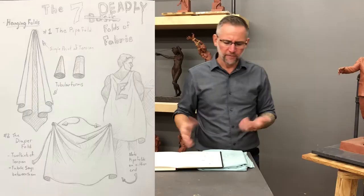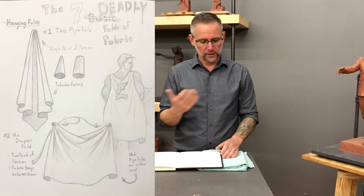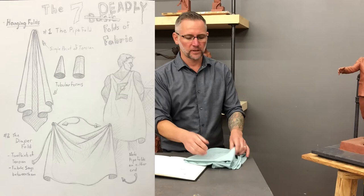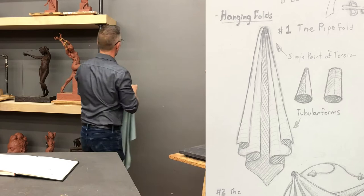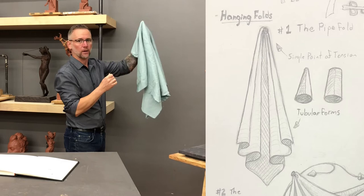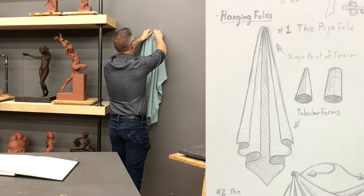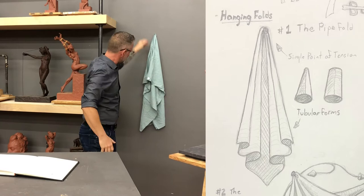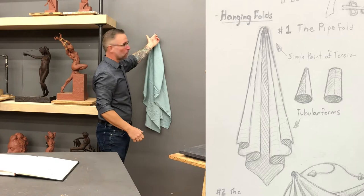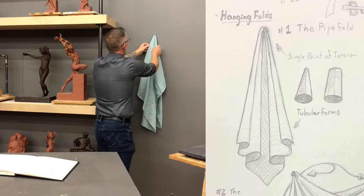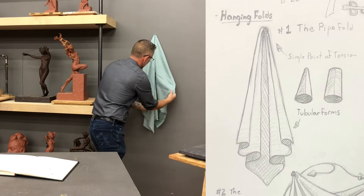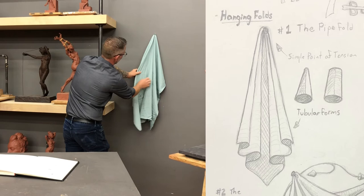The first fold is the basic hanging fold — the pipe fold. The hanging fold is basically when you have a single point of tension. So let me take this piece of fabric and a thumbtack. This represents a point of tension — gravity is pulling the fabric down, but that one thumbtack is resisting that. You can see it as a sort of battle between gravity and the point of tension. What ends up happening is you can see it pulls in these long, straight tube-like forms.